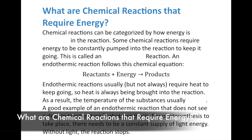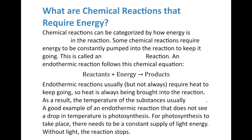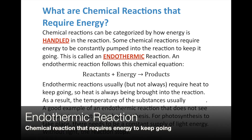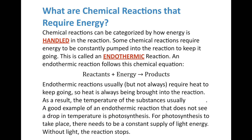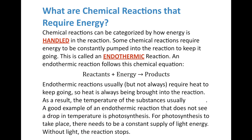Chemical reactions can be categorized by how energy is handled in the reaction. Some chemical reactions require energy to be constantly pumped into them — kind of like a tire you've got to pump air into for it to operate. This is what we call an endothermic reaction. 'Endo' meaning in, 'thermic' meaning heat. The equation looks like: reactants plus energy yields products. Energy goes in with the reactants to create the products. Endothermic reactions usually require heat to keep going, so the temperature of a substance usually drops.